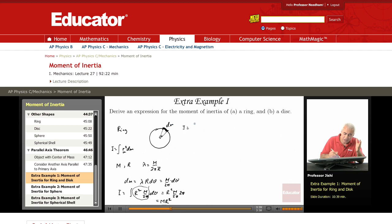So I is just r square dm. But r is a distance from the axis, which is here, so from the center to dm. And how much is r? It's just the radius itself. So r square is just the radius square, which is a constant. So this is just r square dm.